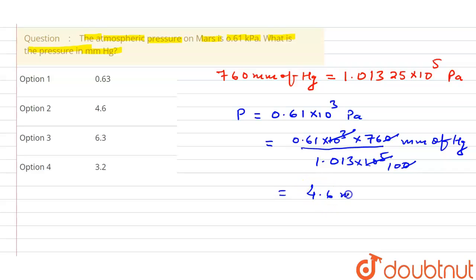Now after calculation, this value is coming out to be 4.6 mm of Hg. So this will be the final pressure, 4.6 mm of Hg. That means option second is the right one.